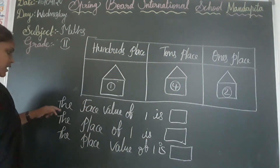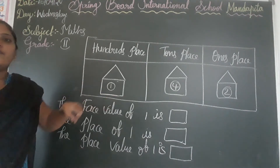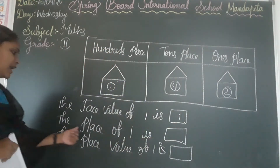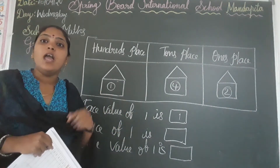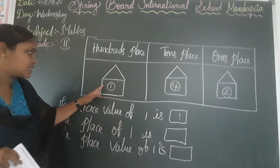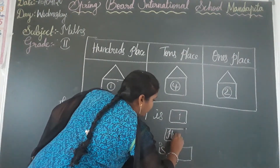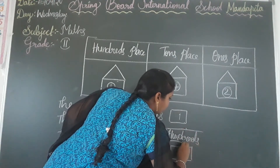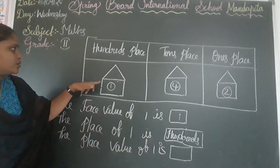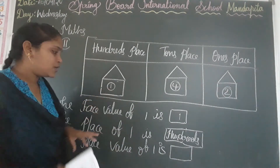The face value of 1 — wherever it is placed, face value never changes — is 1. The place of 1: observe which place 1 is in. Here 1 is in the 100's place, so write '100's place.' Next, the place value of 1: since 1 is in the 100's place, the place value of 1 is 100. Note: a 3-digit number has three places — 100's place, 10's place, and 1's place.